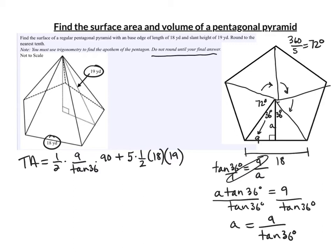Now we can punch all this into the calculator. You can use Desmos.com, but remember to click the toolbar icon and change it from radians to degrees — Desmos defaults to radians, probably because it's a graphing calculator. Rounding to the nearest tenth, I get 1,412.4 square yards.